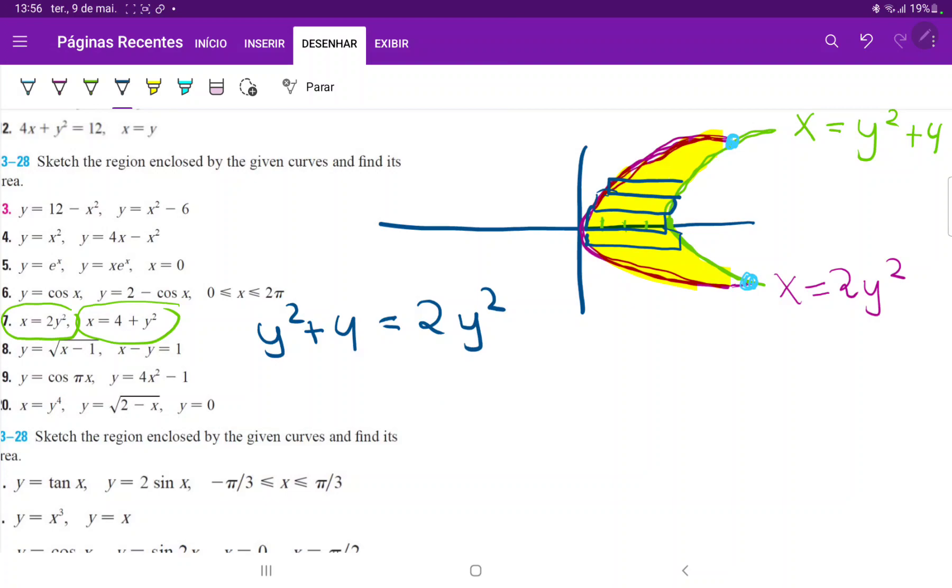So we'll bring everything over to the left and minus two y squared plus y squared is just minus y squared plus four is equal to zero. So when we actually, maybe I should have brought the other one to the right side, because then it's easier. So I'll just bring this y squared to the right side. So four is equal to two y squared minus y squared is y squared. And now I can solve for y. So y is equal to plus or minus two.